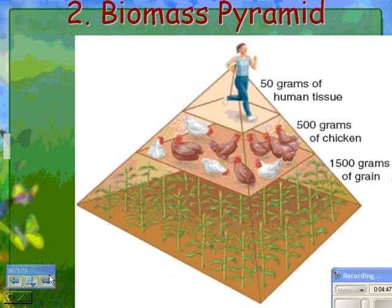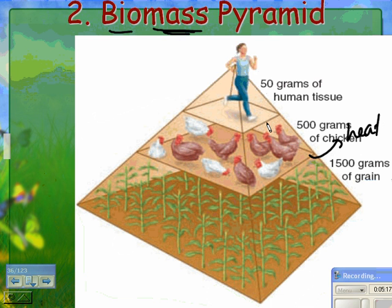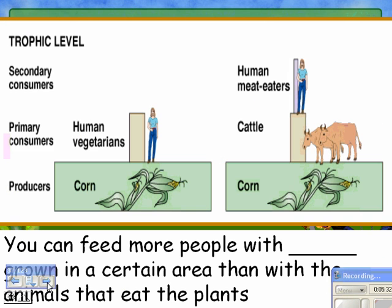The next is a biomass pyramid, which is almost the same thing. Biomass refers to living mass — the weight or amount of matter you have. Following the 10% rule: you might have 1,500 grams of grain, about 10% of that in grams of chicken, and then the grams of human tissue supported by those chickens. You keep getting smaller going up because at each level you lose energy as heat or energy used just to move around. The biomass is the weight of organisms at each trophic level.